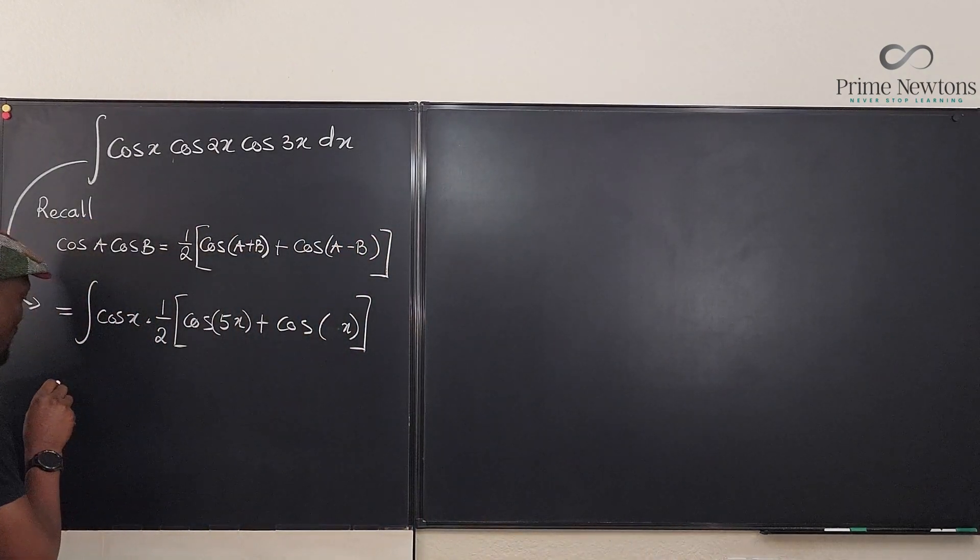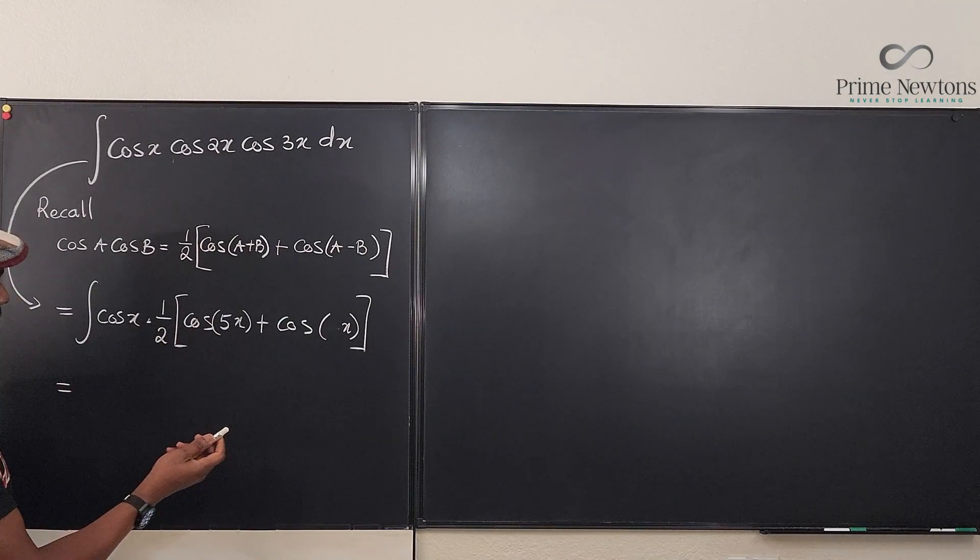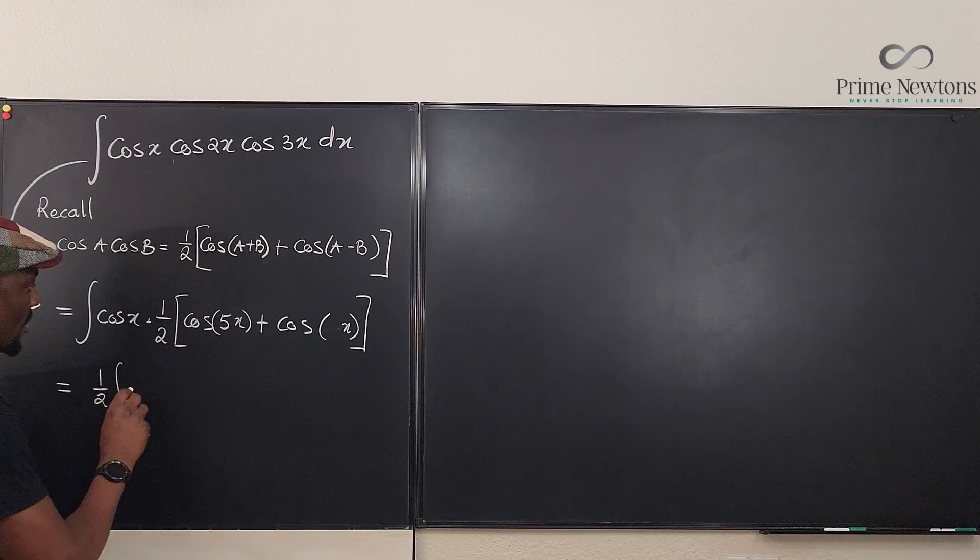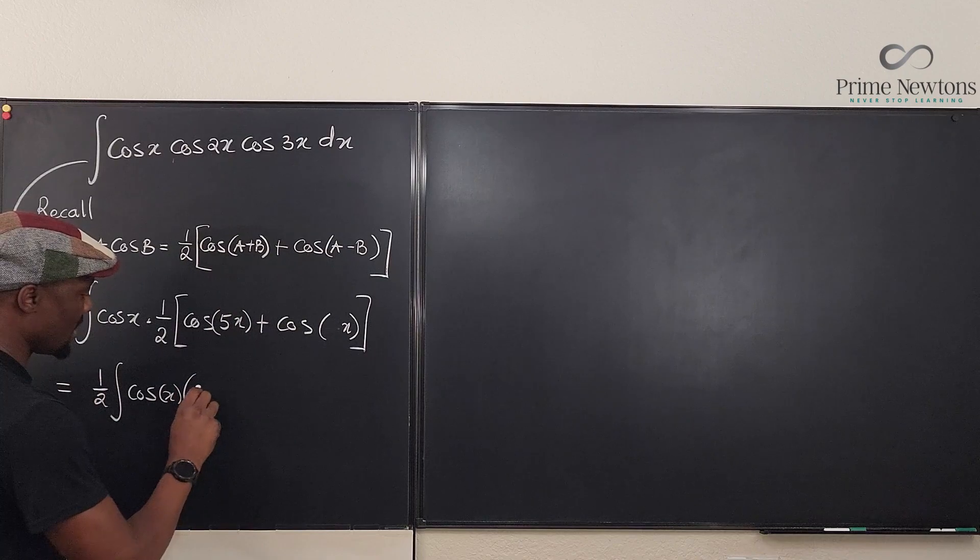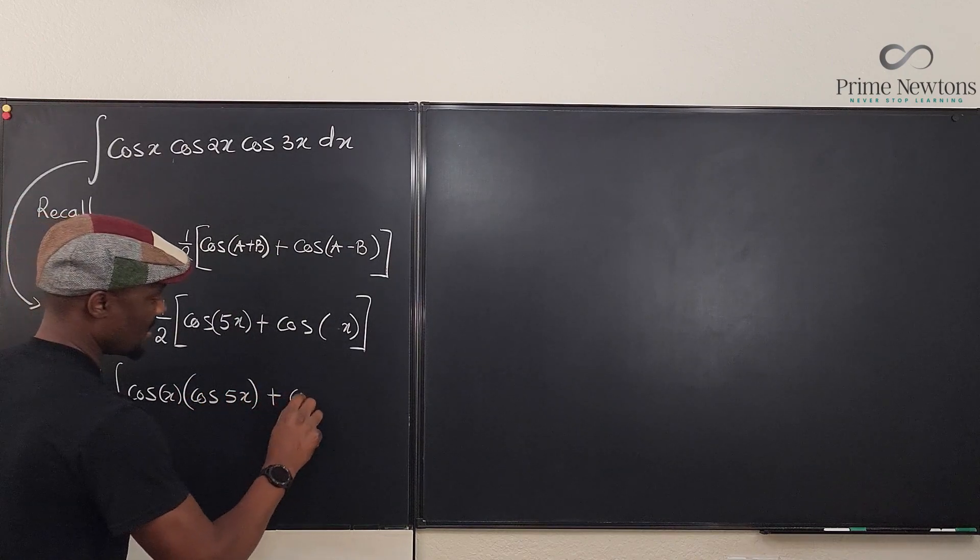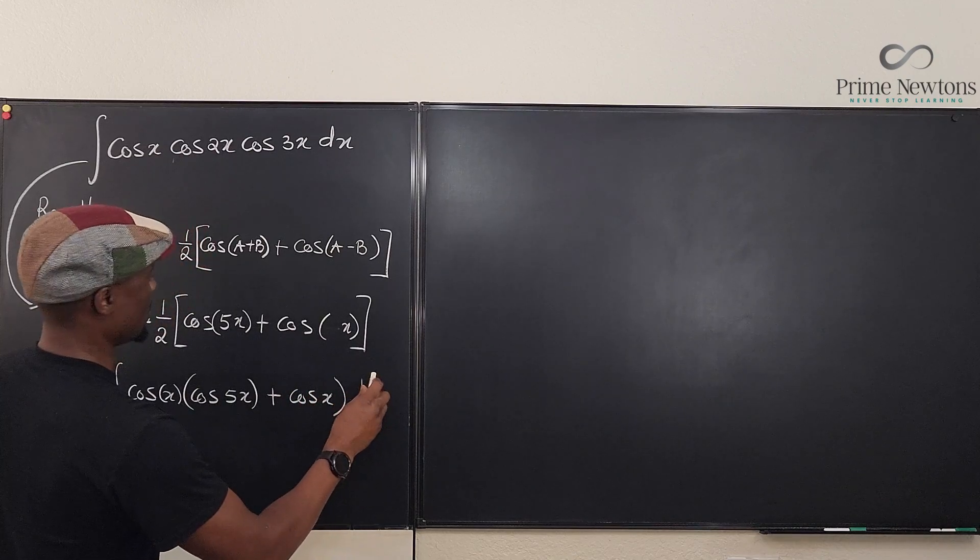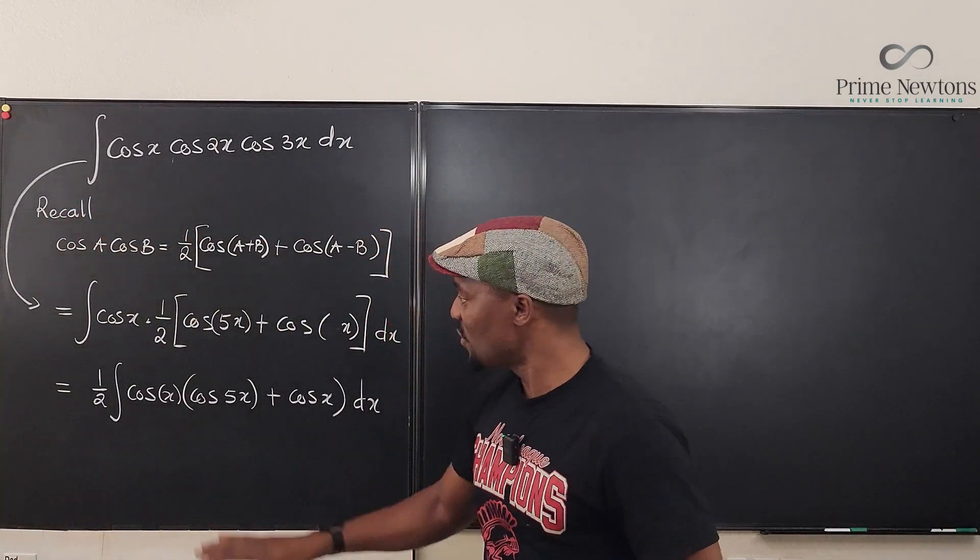This is going to be equal to, I'm going to pull this one half to the back because the one half multiplies everything. So it's going to be one half of the integral of cosine x times cosine 5x plus cosine x dx. What is my dx?